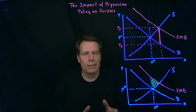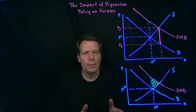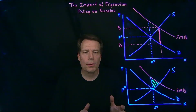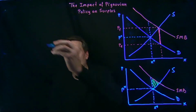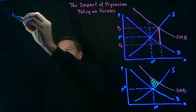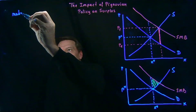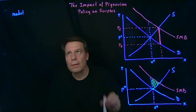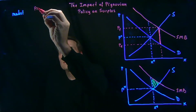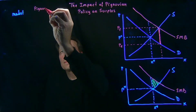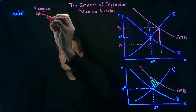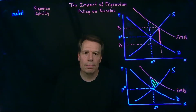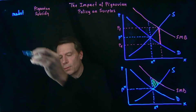Now we want to ask what are all the surplus areas that we can add up for the market and under the Pigouvian subsidy, so we can compare the two. We'll have two columns: one for the market and one under the Pigouvian subsidy. And we can begin by thinking about consumer surplus.